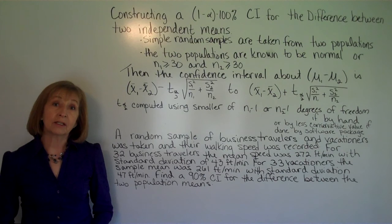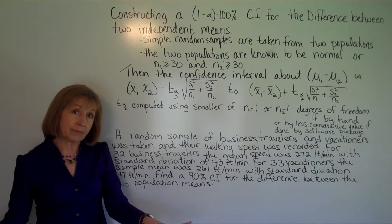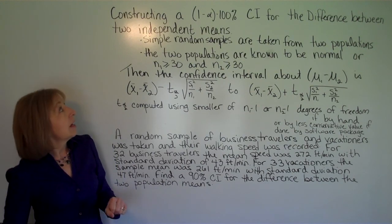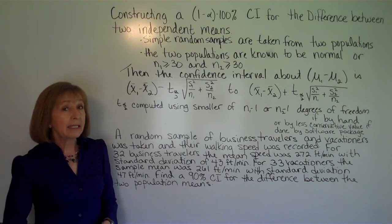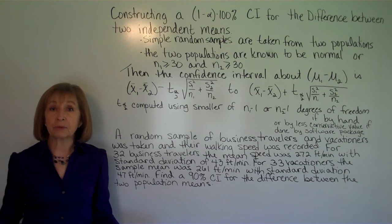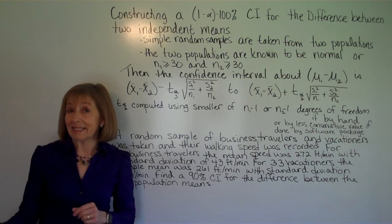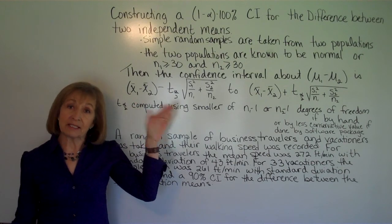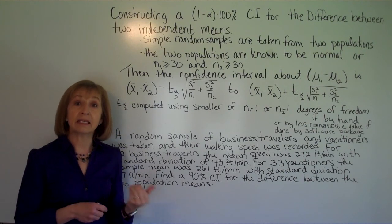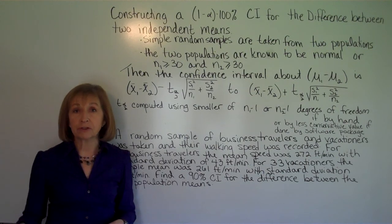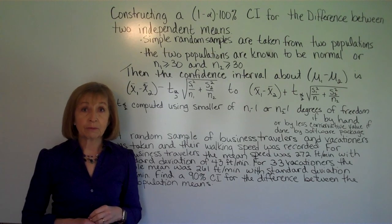In inferential statistics, we can compare two population means when we sample independently between two groups by doing a confidence interval of the difference between the two population means. When we say we sampled from two groups, we took a random sample from one group and a random sample from another group — not just from one group compared to specific reference numbers. Independent sampling means the individuals from the first sample do not dictate the individuals picked from the second sample.